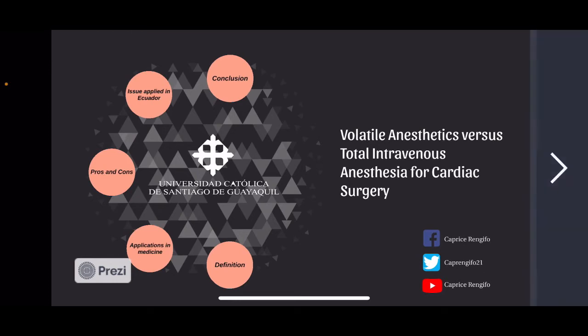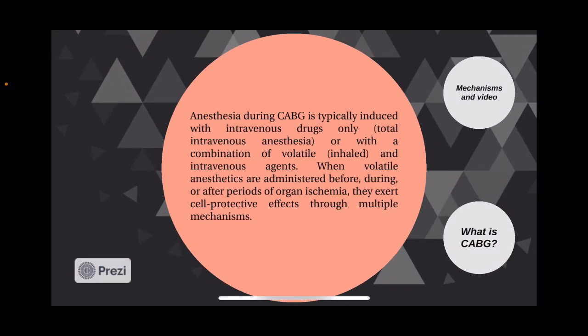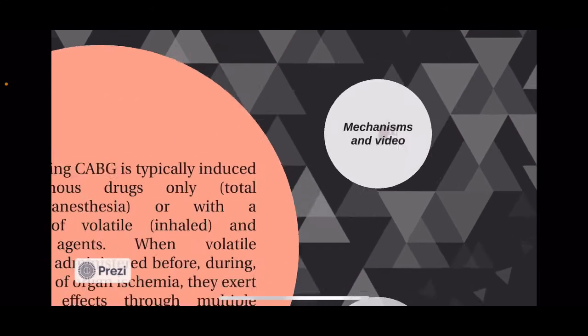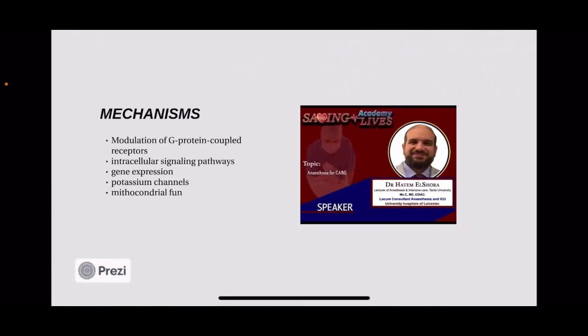Applications in Medicine. Anesthesia during coronary artery bypass grafting is typically induced with intravenous drugs only, or with a combination of volatile and intravenous agents. When volatile anesthetics are administered before, during, or after periods of organ ischemia, they exert self-protective effects through multiple mechanisms. These mechanisms include modulation of G-protein coupled receptors, intracellular signaling pathways, gene expression, potassium channels, and mitochondrial pathways.